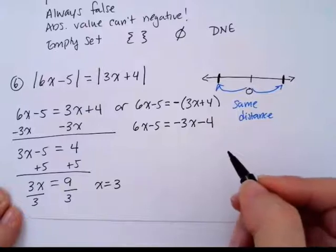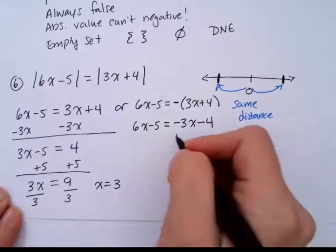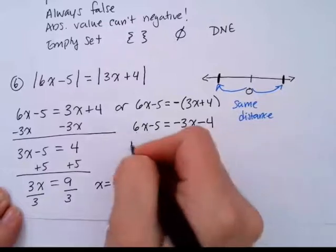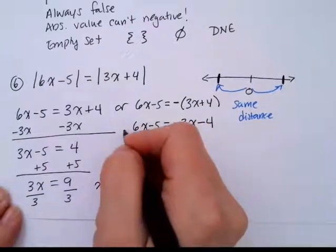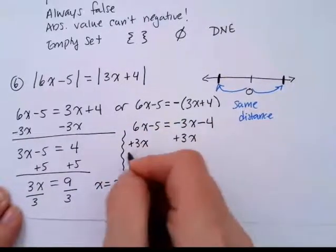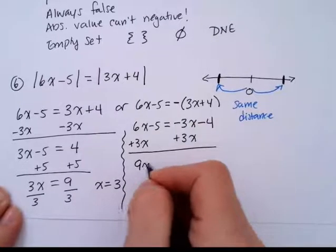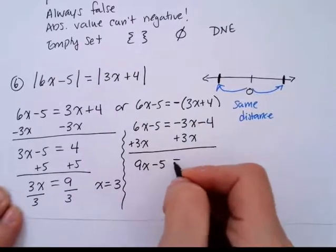So now I want to isolate x. So maybe I will add 3x to both sides. 9x minus 5 equals negative 4.